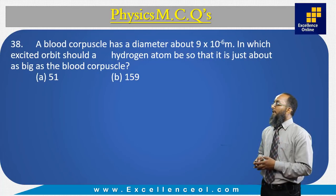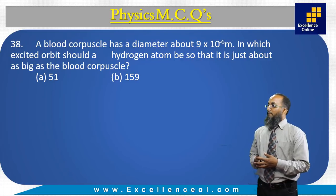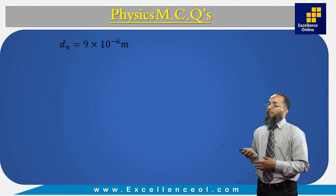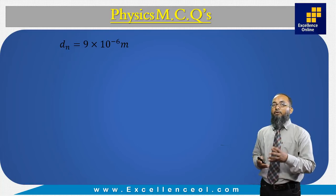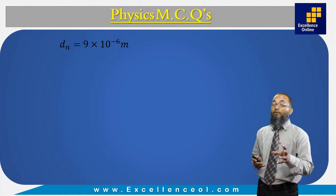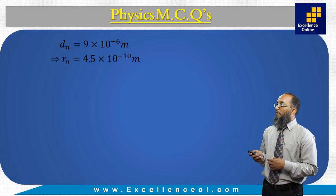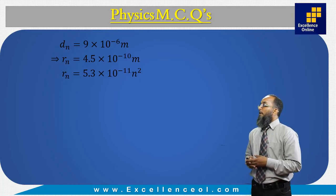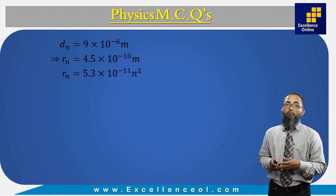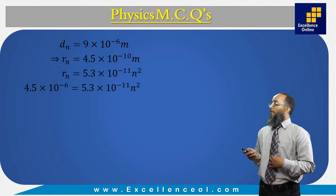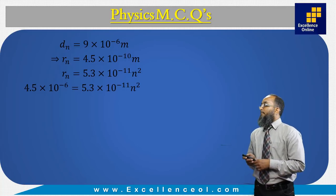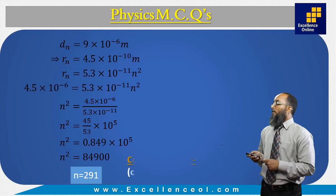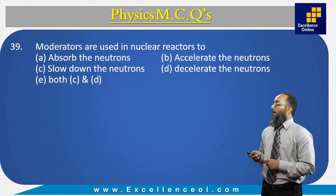A blood capillary has a diameter of about 9 × 10⁻⁶ m. In which excited state should a hydrogen atom be so that it is just about as big? The radius is 4.5 × 10⁻⁶ m. Using Bohr's theory, the radius of the nth orbit is 5.3 × 10⁻¹¹ × n² m. Substituting and solving for n², we get approximately 291. The correct answer is C: n² = 291.